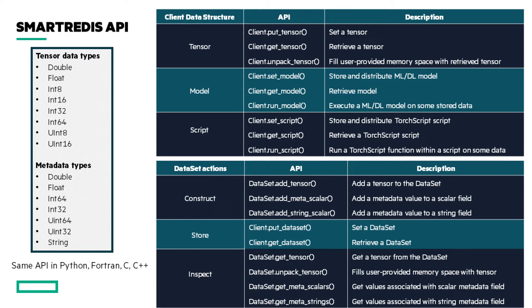Another great backend feature of the dataset — which users only see through performance gains — is that it allows us to do a lot of manipulation on the backend to preserve data locality, giving efficiency gains for model inference and PyTorch script runs.